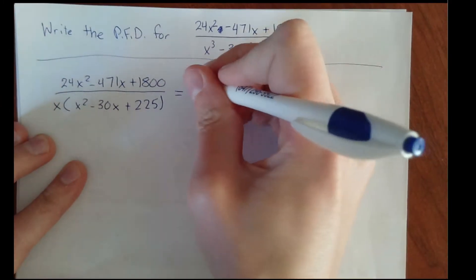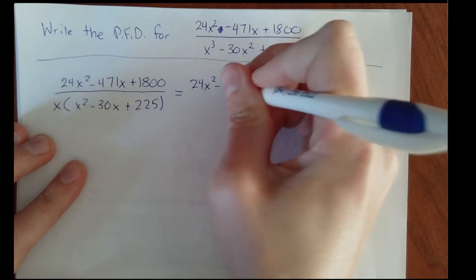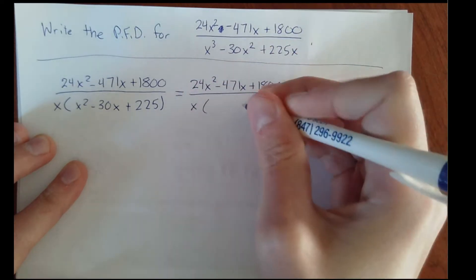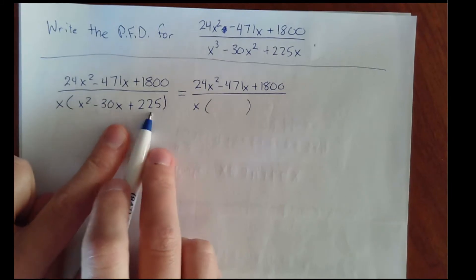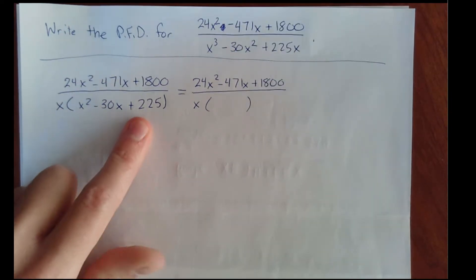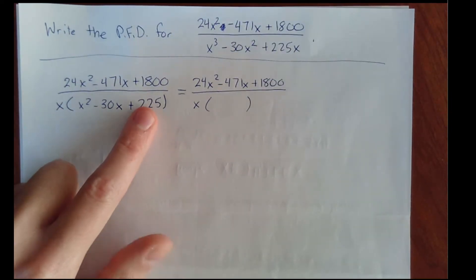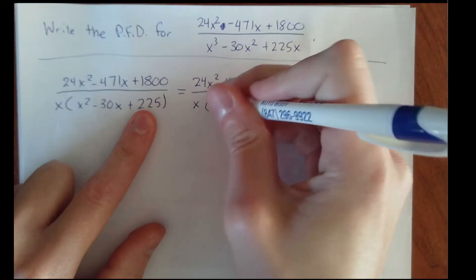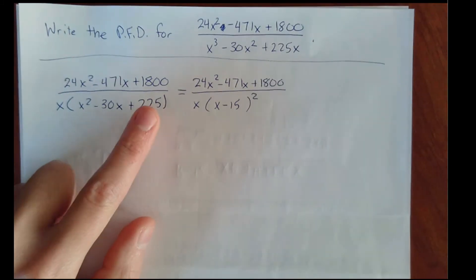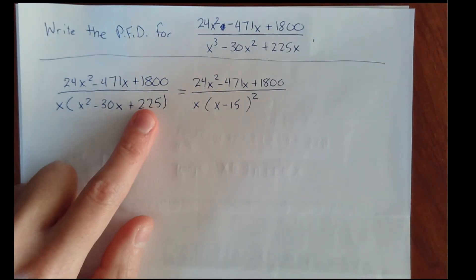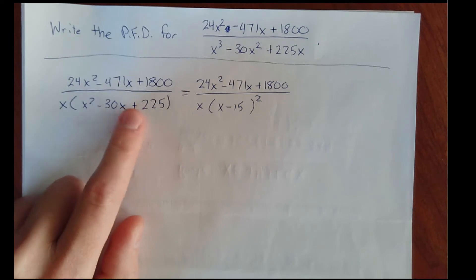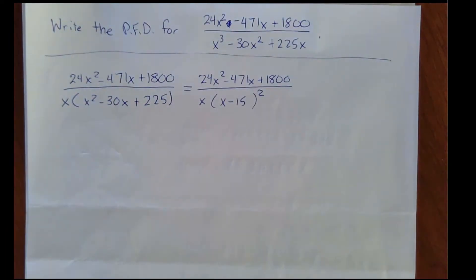Then factor again. I need two numbers that multiply to 225 and add to negative 30. Notice that negative 15 times negative 15 equals 225, and negative 15 plus negative 15 equals negative 30. So this is x minus 15 squared — this factors as x minus 15 times x minus 15, or x minus 15 squared.